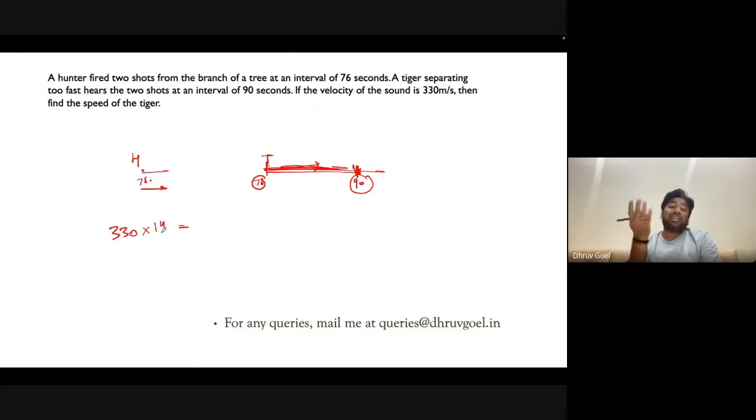The tiger covers this distance in 90 seconds. When the tiger hears the first shot, it starts running, and it runs for 90 seconds to cover the same distance.